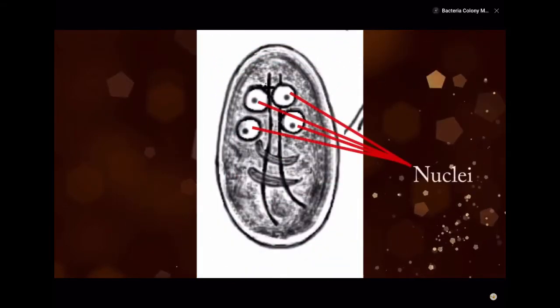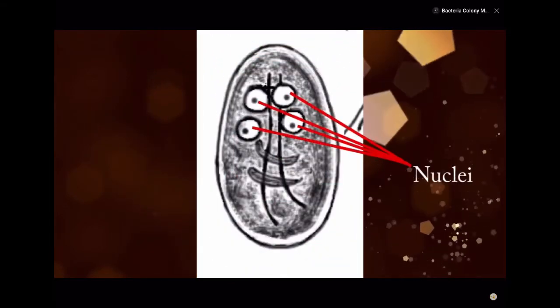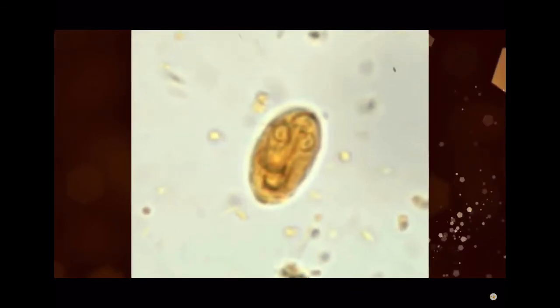Mature cysts have 4 nuclei, while immature cysts have 2. Nuclei and fibrils are visible in both iodine-stained wet mounts and trichrome-stained smears.